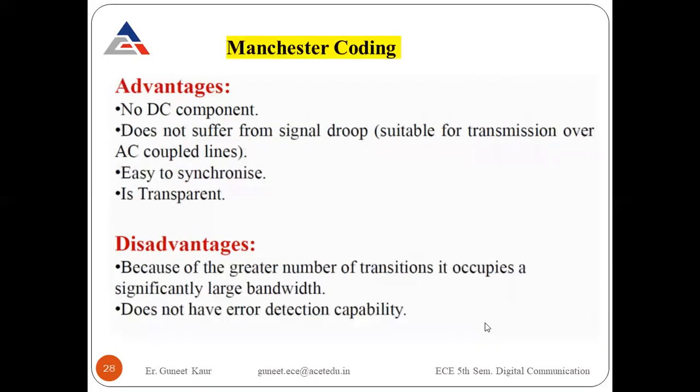For Manchester coding, the advantages are: no DC component, does not suffer from signal drop, easy synchronization, and it is transparent. The disadvantages are: due to the greater number of transitions it requires a large bandwidth, and it does not have error detection capability.